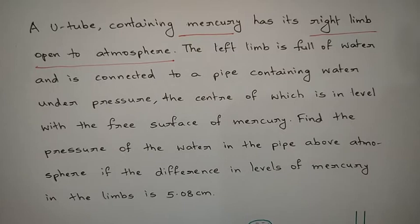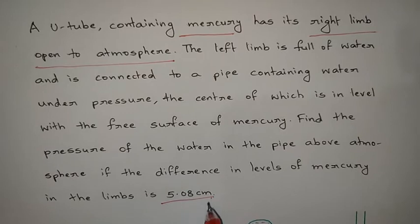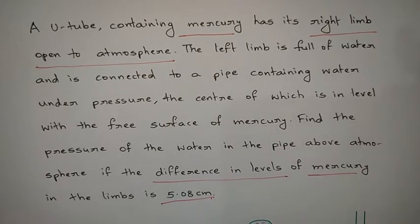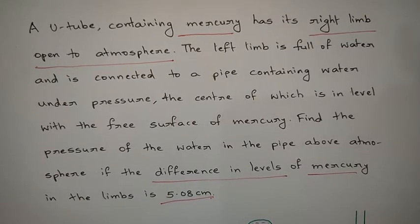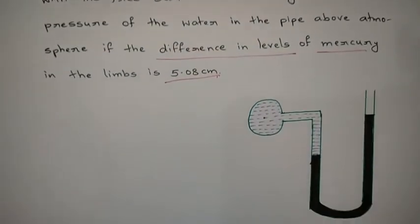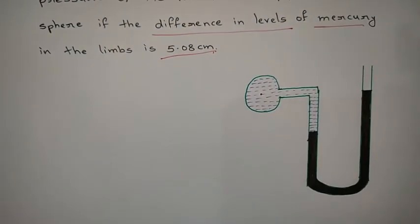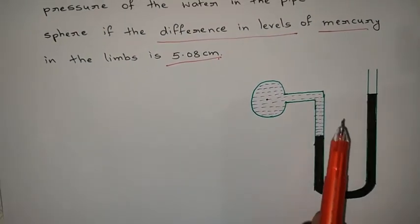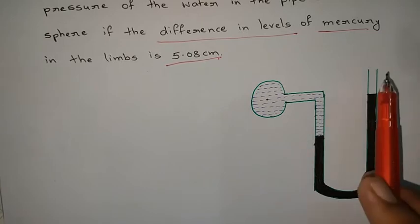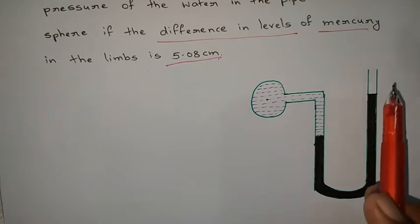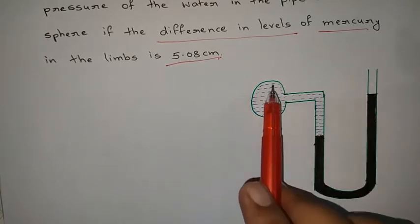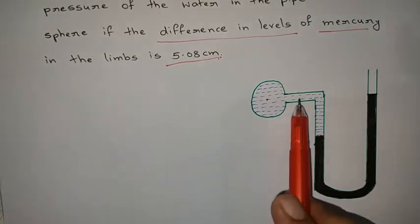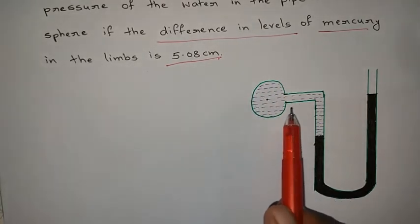The difference in levels of mercury is 5.08 centimeters. So according to the problem, the diagram will be like this — a U-tube manometer connected to the pipeline. Here I have shown the cross section of the pipeline.